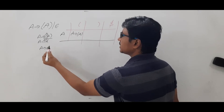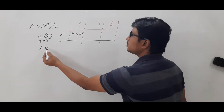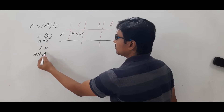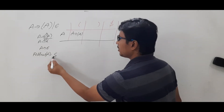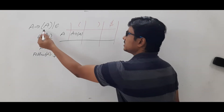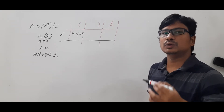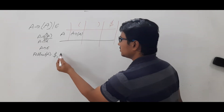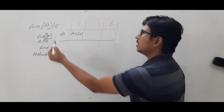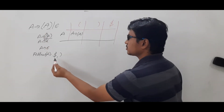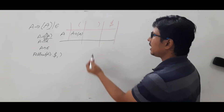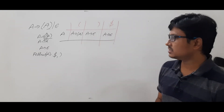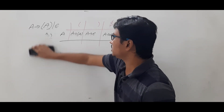For the next production A determines epsilon, we need to compute the follow of A. Since A is the start symbol, follow of A includes dollar. Also, in the right-hand side where A appears, the symbol after it is closed braces; the first of closed braces is closed braces itself, since it is a terminal. So follow of A is dollar and closed braces. We place A determines epsilon in both those entries.